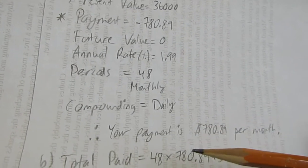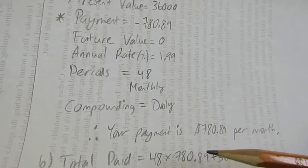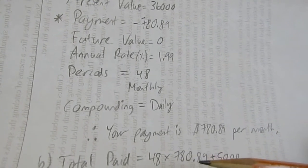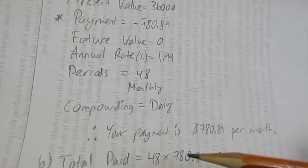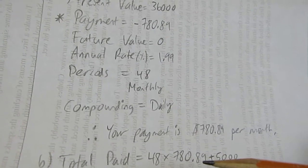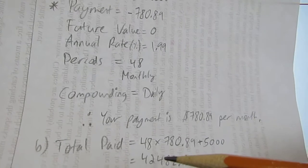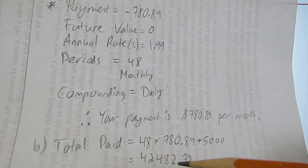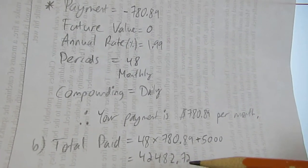When you multiply 48 times $780.89 and you add $5,000, you get that you spent $42,482.72 on this truck.